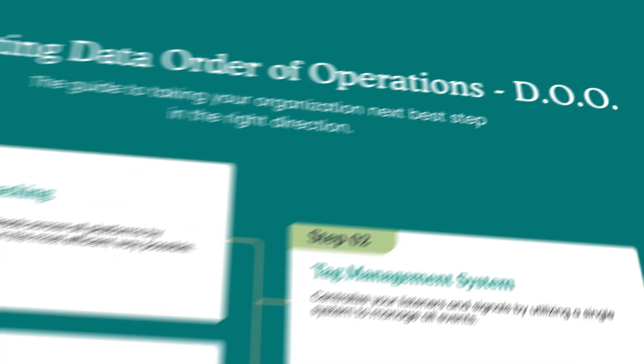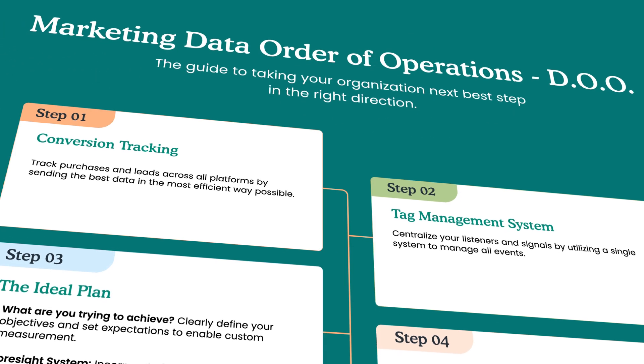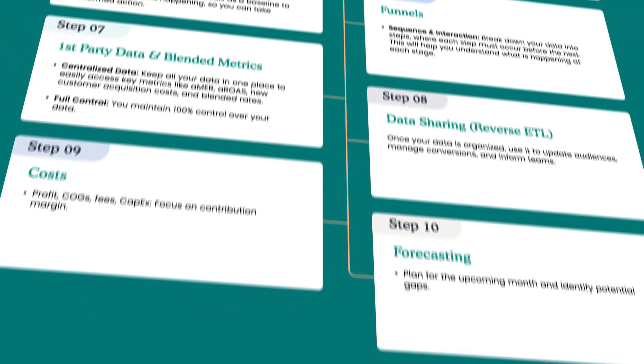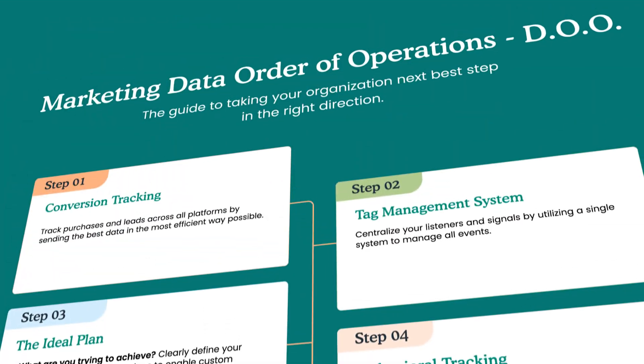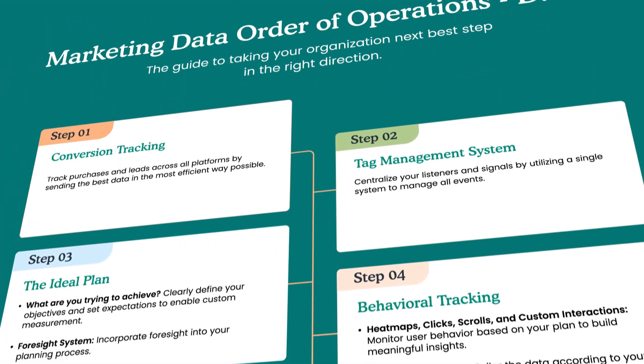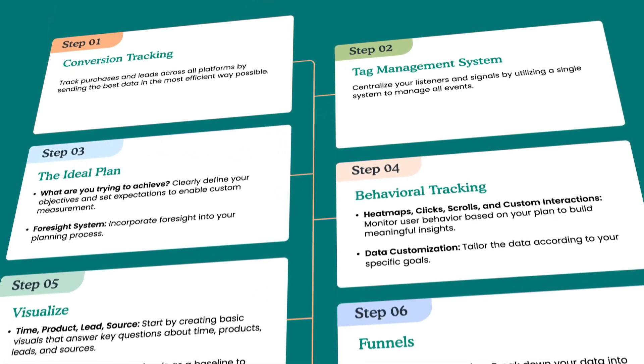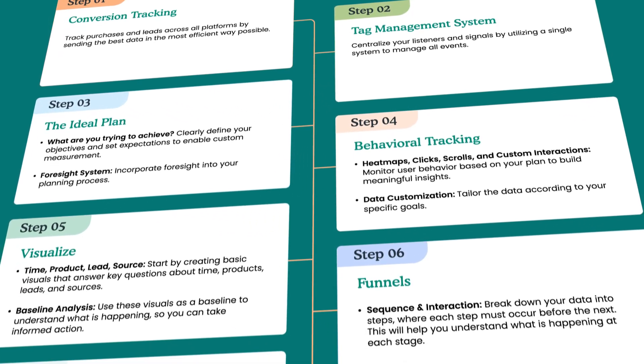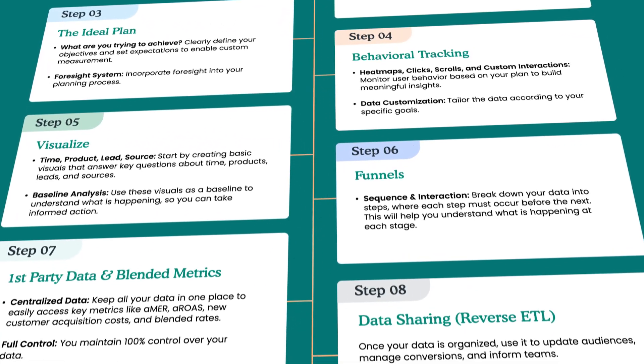Hey there, my name is JJ Reynolds, founder over at Vision Labs, and today we are going to be talking about the DOO, the Data Order of Operations. This is something that we have started rolling out to all of our clients — we need an action plan to say where are we starting, where are we going, and how do we get there again and again and again, consistently leveling up.